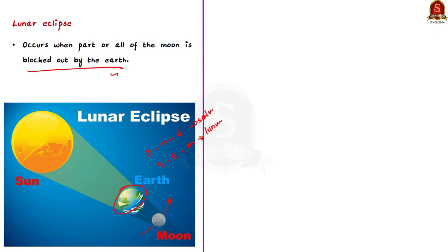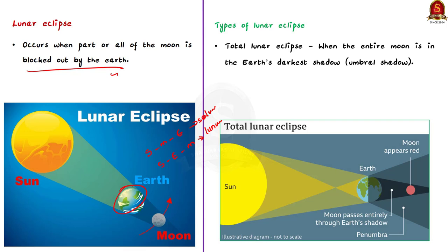Now let us see the types of lunar eclipse. Firstly, there is the total lunar eclipse. It occurs when the entire moon is in the earth's darkest shadow. What is the earth's darkest shadow? As we saw earlier, it is the umbral shadow.